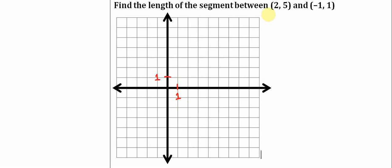So the first point is going to be 2, 5. Go over 2, up 1, 2, 3, 4, 5. And the second point is going to be negative 1, 1. So that puts it right here.